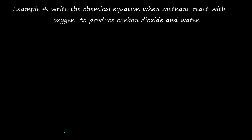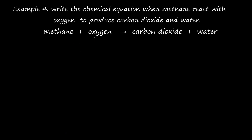Example 4: Write the chemical equation when methane reacts with oxygen to produce carbon dioxide and water. Methane and oxygen are on the reactant side; carbon dioxide and water are on the product side. The first step is to translate this word equation into a skeletal equation. The formula for methane is CH₄, for oxygen is O₂, for carbon dioxide is CO₂, and for water is H₂O.